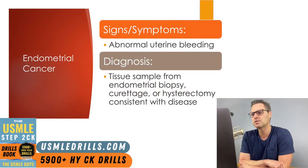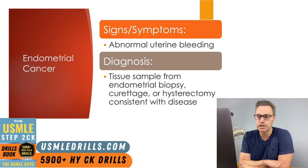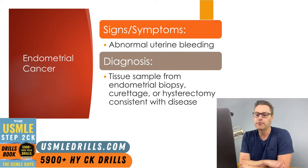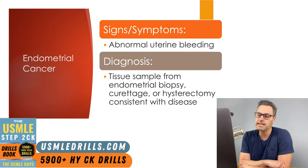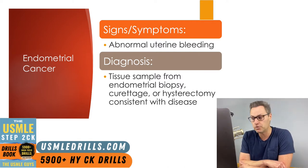In terms of signs and symptoms, the key symptom to keep in mind is abnormal uterine bleeding, which occurs in up to 90% of cases. A patient who has uterine bleeding after menopause should definitely be worked up for the possibility of endometrial cancer. For patients who are still menstruating, the abnormal uterine bleeding can take the form of intermenstrual bleeding, excessively heavy bleeding, or prolonged bleeding beyond what would typically be considered normal.